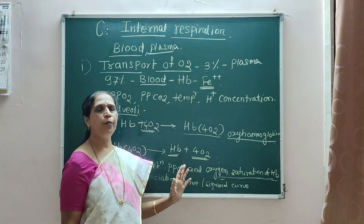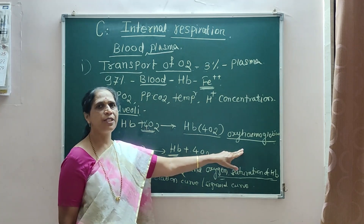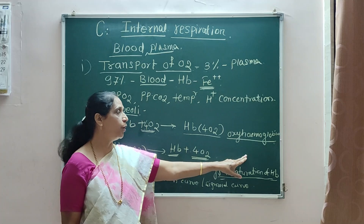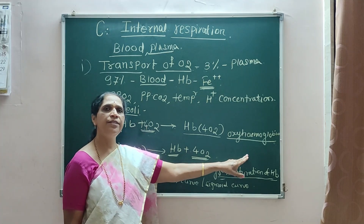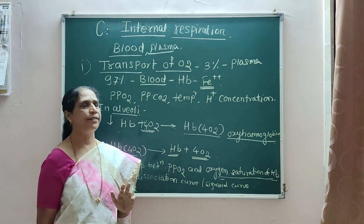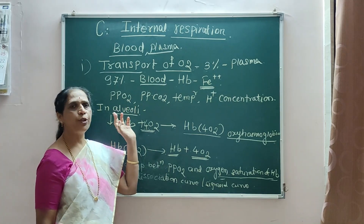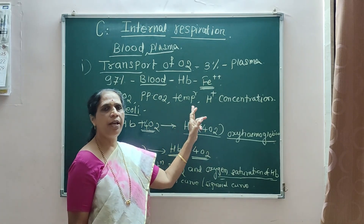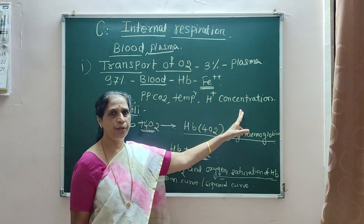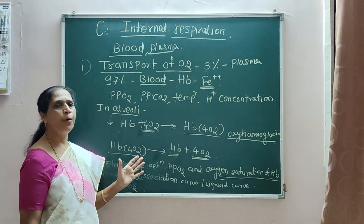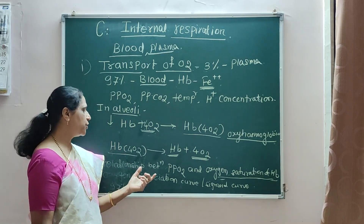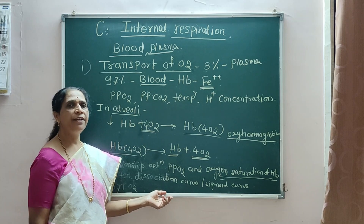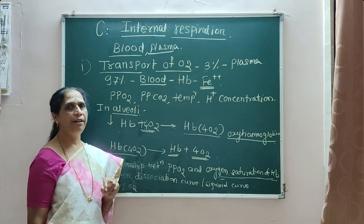In the transport of O2, formation of oxyhemoglobin is an important term. Oxyhemoglobin formation depends on four important factors: partial pressure of O2, partial pressure of CO2, temperature, and H+ ion concentration. In this transport of O2, there are three important terms: oxygen dissociation curve or sigmoid curve, Bohr effect, and Haldane effect.